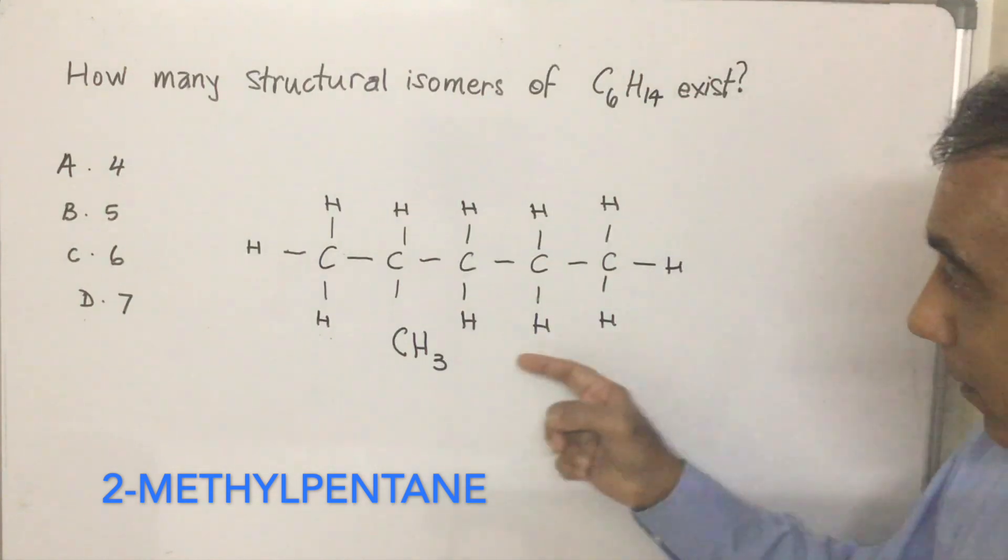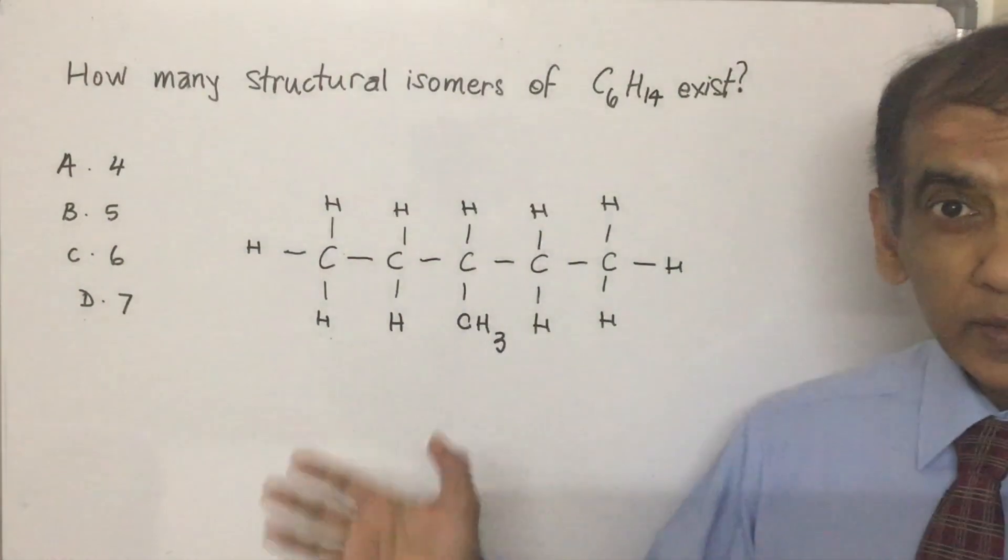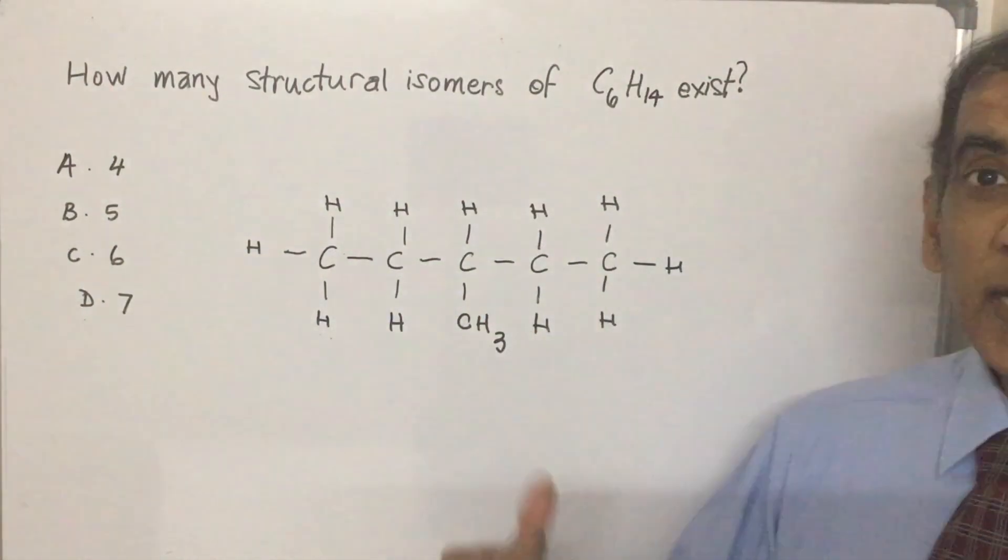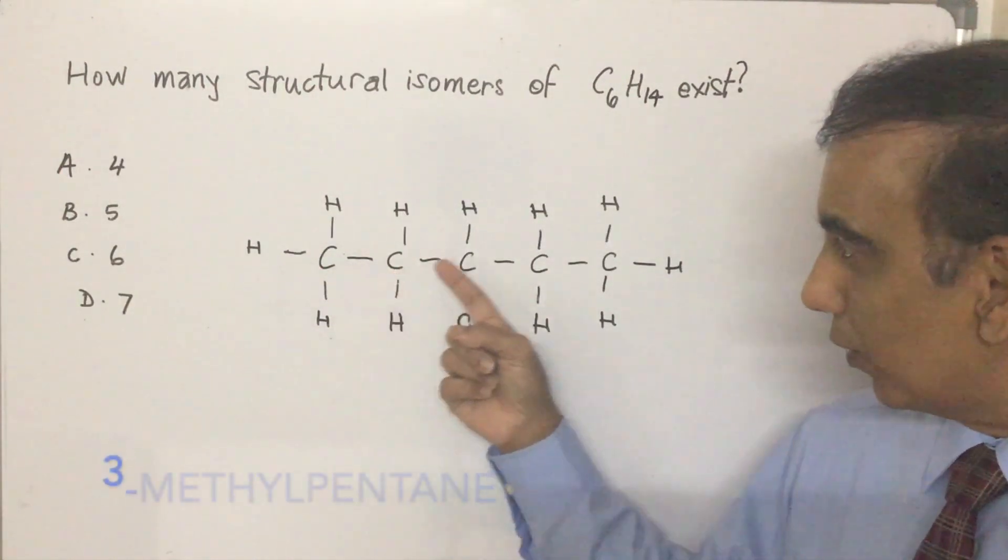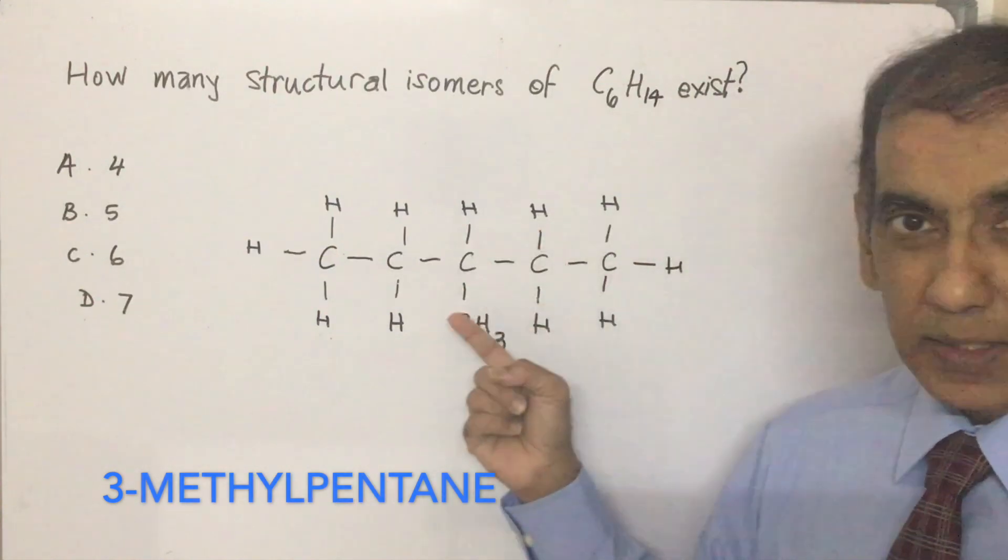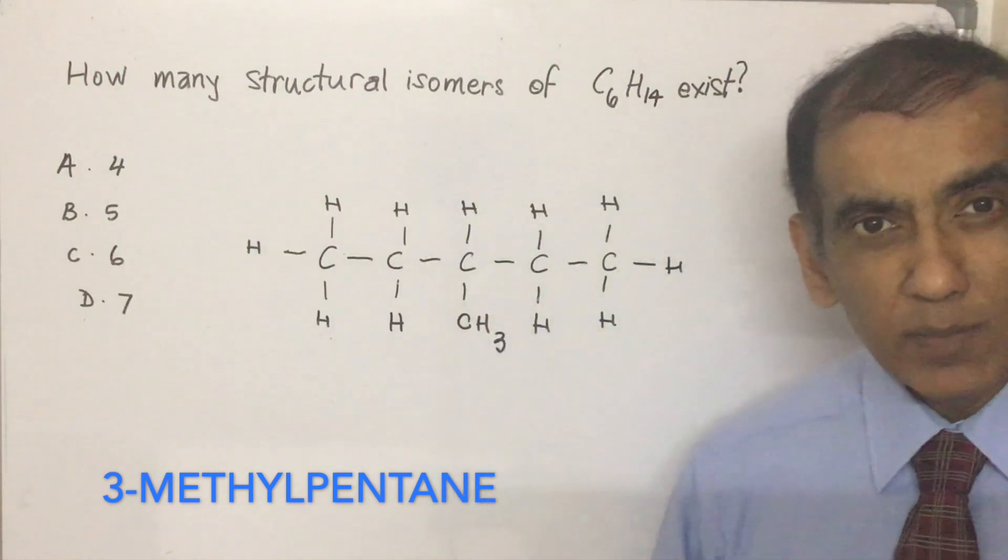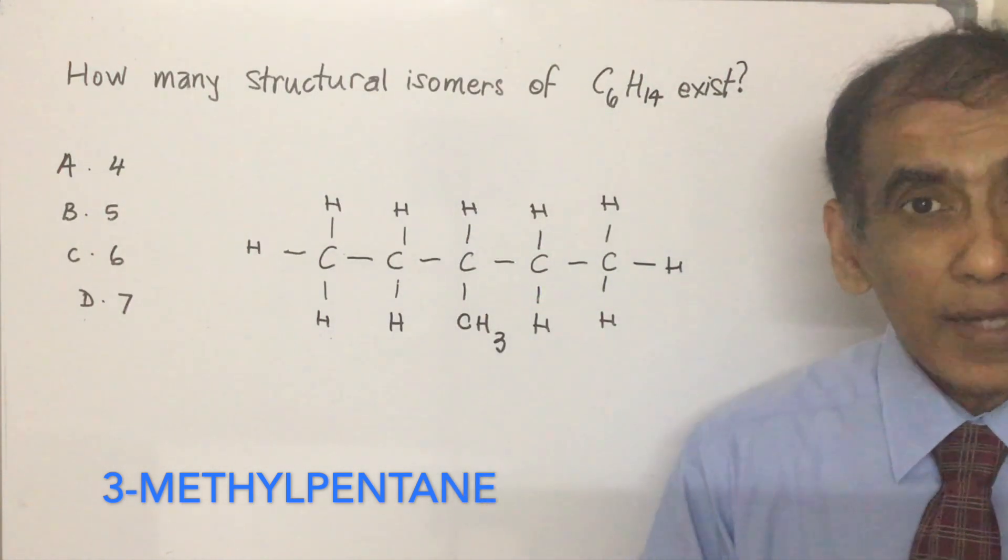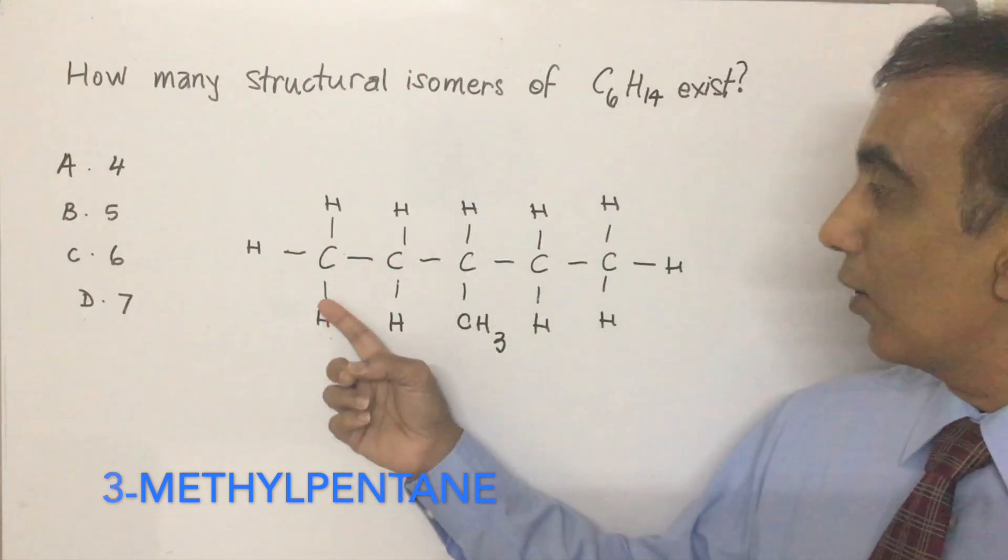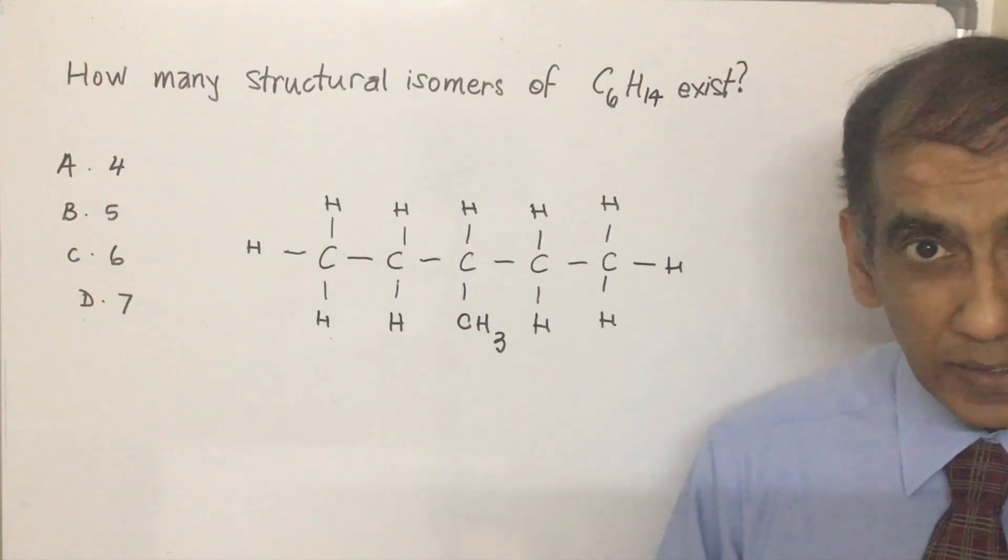Then what about if this CH3 gets attached here instead? Once again, you can count and see that you get C6H14. But what's the name of this structure now? 1, 2, 3. Going from this side, you'll still get 1, 2, 3. So the smallest number has to be maintained to describe where this methyl group is following the IUPAC naming system. This would be called 3-methylpentane. That's the third isomer that we can identify.